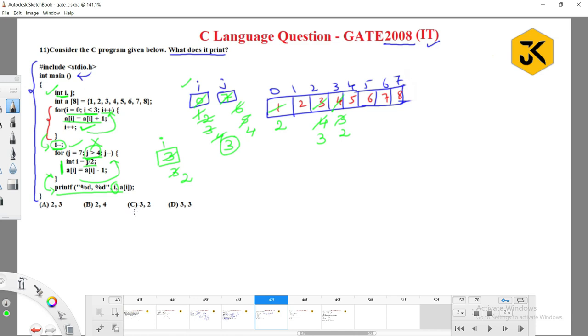First one is three, so we can eliminate option a and option b. And what is a of i? Again this a of i, we have to check. a of i means a of three. a of three means what? Two. So three comma two is the answer. Option c is the correct answer. I hope you understood clearly. Thank you.